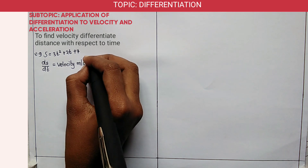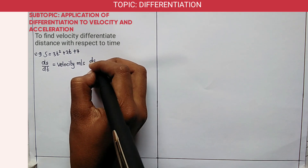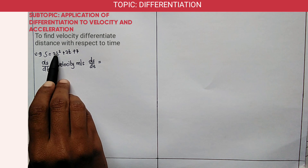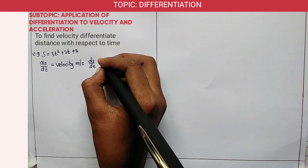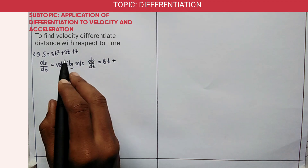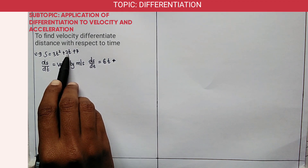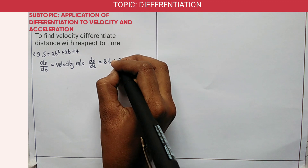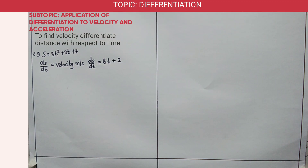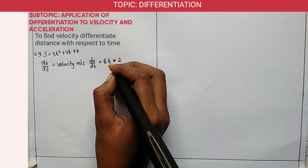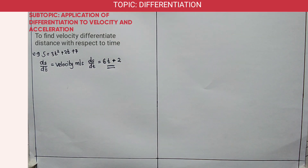So ds/dt in this case: multiply the coefficient by the power, that is 3 times 2, which is 6t, plus — t has a power of 1, multiply by its coefficient 2, and t will remain with power 0 after subtracting 1, which equals 1. So the velocity is 6t plus 2.